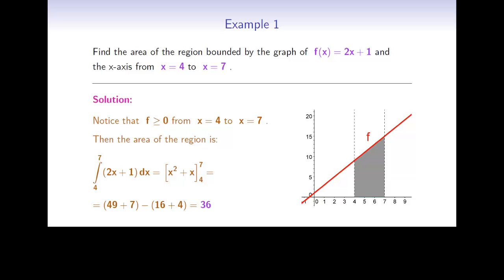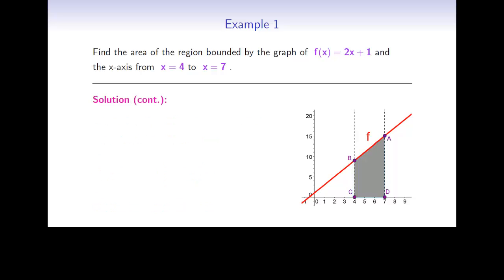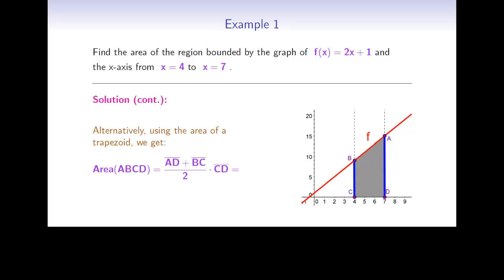But there is another way. In this specific case, the region is a simple shape — it's a trapezoid. Let's mark its vertices by a, b, c, and d. We can use the formula for the area of a trapezoid: the sum of the bases, ad and bc, divided by 2, times the height cd. Using the formula for the function f, we compute ad and bc, and get 15 plus 9. We divide by 2 and multiply by the height cd, which equals 3, ending up with the same answer: 36.